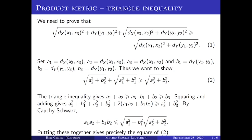This is not the only way of defining a product metric on X times Y. There are different ways that turn out to be equivalent in a sense I'll talk about more later. The reason I've chosen this one is that it's quite natural: the product of R cross R gives R squared with the familiar Euclidean metric, which is exactly what this construction gives.